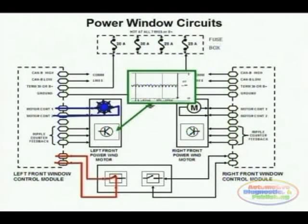The ripple counter is built inside both the motor unit and the window module unit. This information is passed back and forth. This is how the motor is controlled.